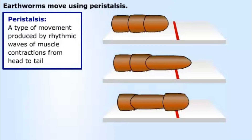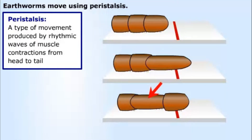Starting at the head, the circular muscles contract to lengthen the compartments, moving the head segments forward. As the longitudinal muscles contract, the head compartments become shorter, but bristles on the surface keep them from slipping backward. The head is now further forward than it used to be.